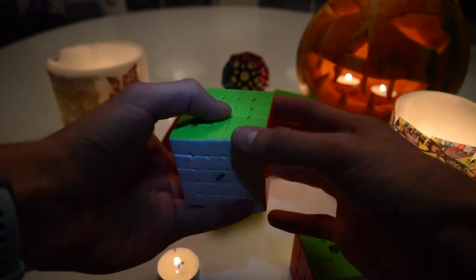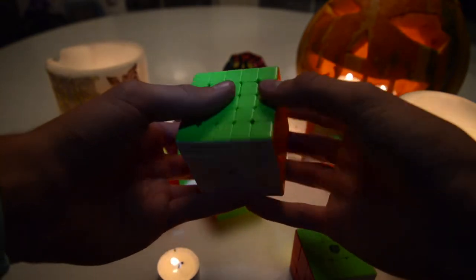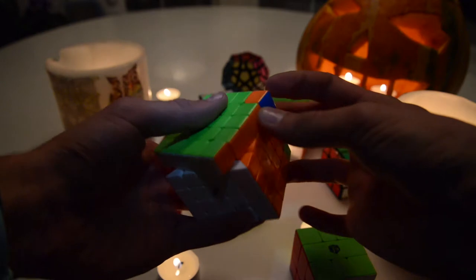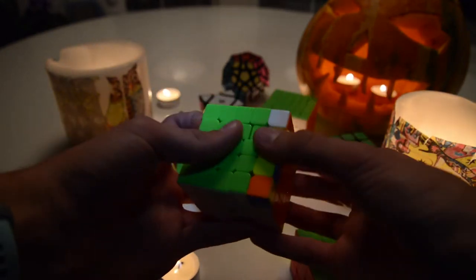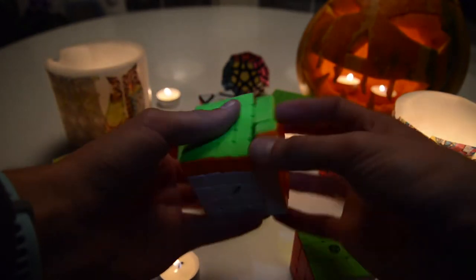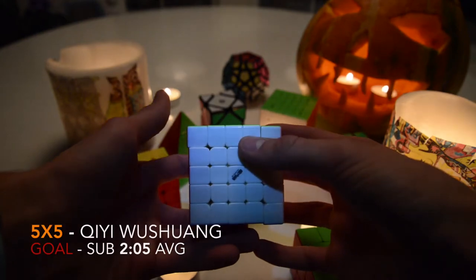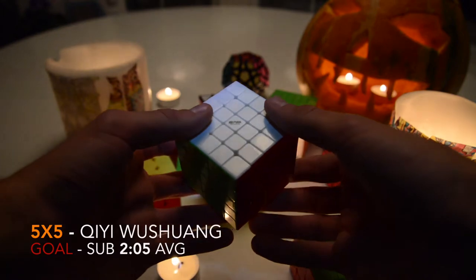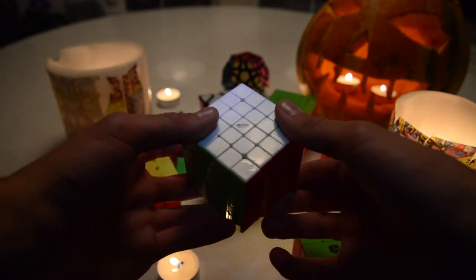Next up it's 5x5. This is the Qi Wuchang 5x5 and I loosened it up a little bit so now it's really good. I average around 2 minutes with this cube now and I'm really looking forward to get around 2 minute average. 2 minutes and 5 seconds average, that is my goal.